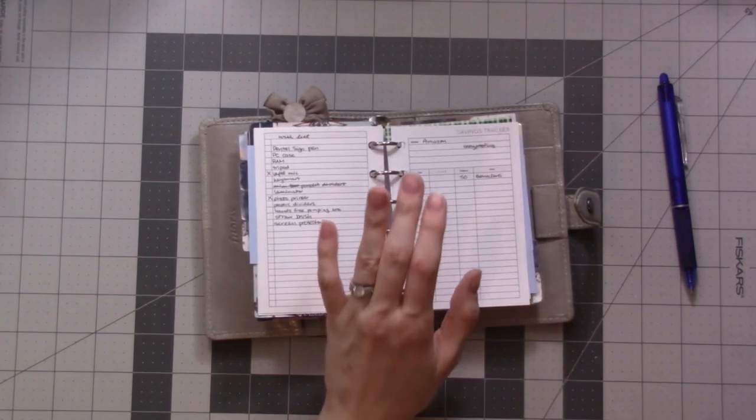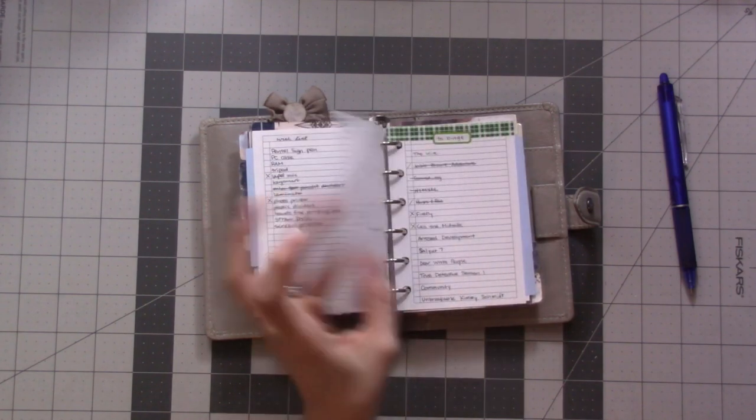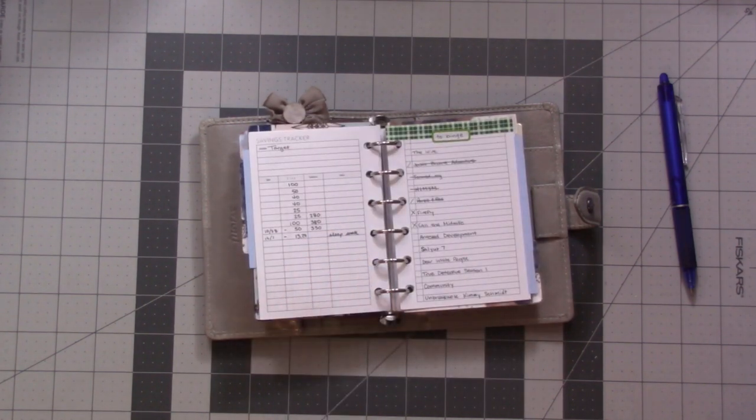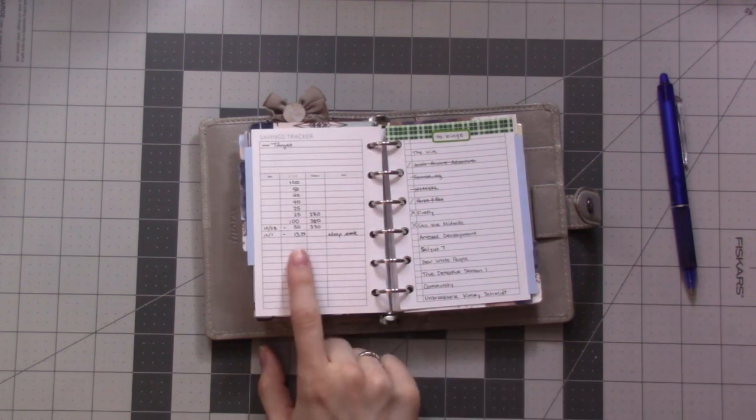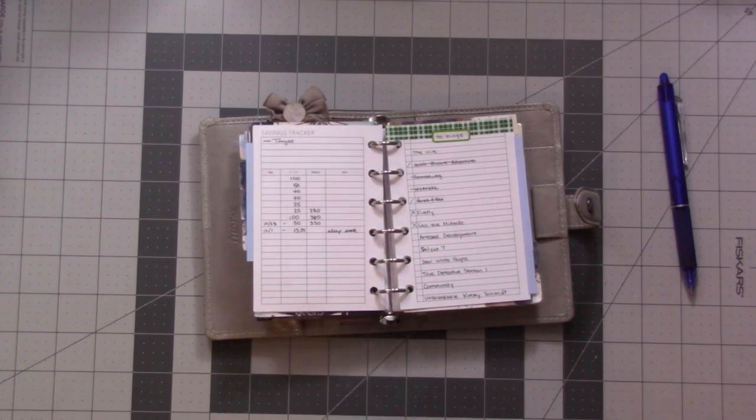This savings tracker I use to keep track of the amount we have in gift cards because we got some gift cards to Amazon and Target from the baby showers. Whenever I spend some of it, you can see we bought a sleep sack for the baby, and then I have to do the math and figure out how much we have left.